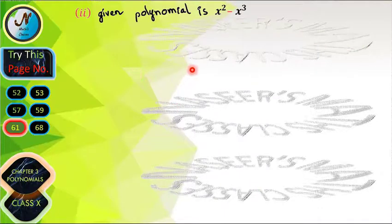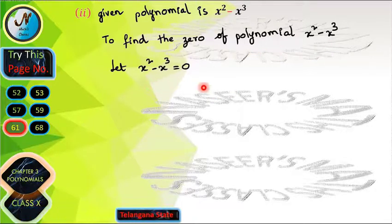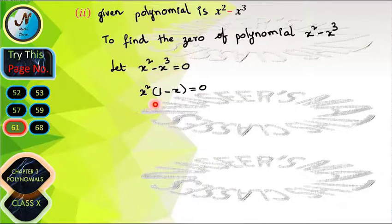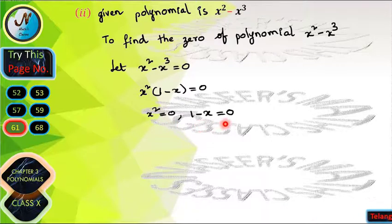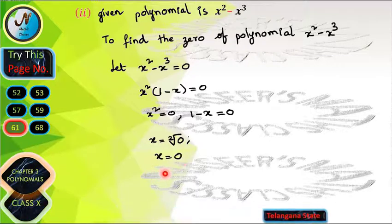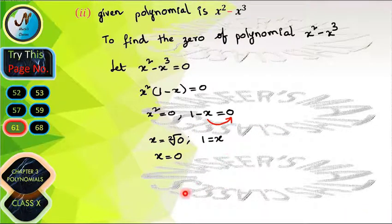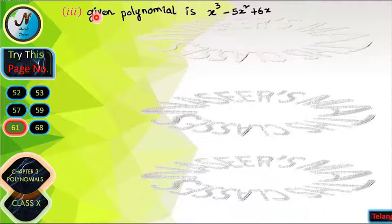The next given polynomial is x² − x³. To find the zeros, we set x² − x³ = 0. Taking x² common, we get x²(1 − x) = 0. So x² = 0 gives x = 0, and 1 − x = 0 gives x = 1. Therefore, 0 and 1 are the zeros of x² − x³; it has two zeros.